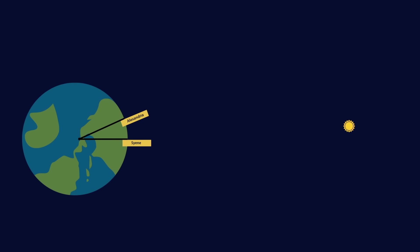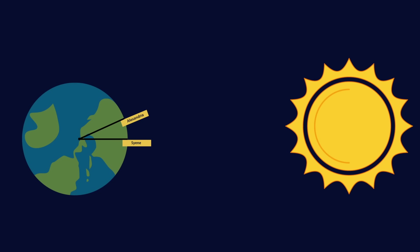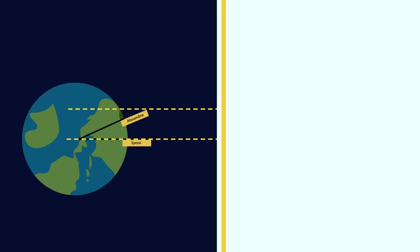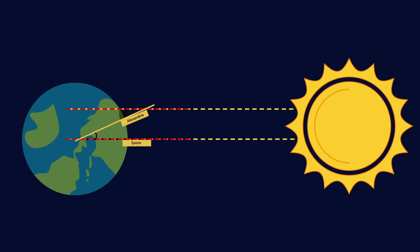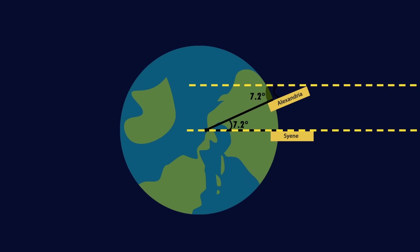He assumed that Earth was a sphere, and also the sun is very far away compared to the size of the Earth, and that would mean that these sun rays are parallel. He was then able to calculate the circumference of the Earth with very simple math, because parallel lines with a line through them mean this angle and this angle are the same. So the angle separating the two cities is 7.2 degrees.